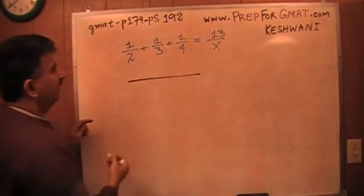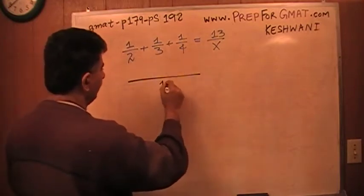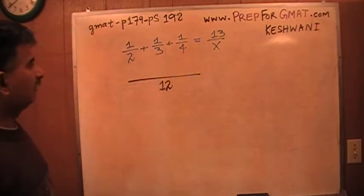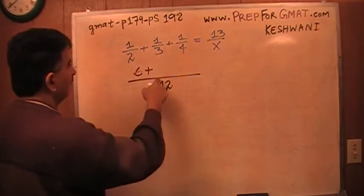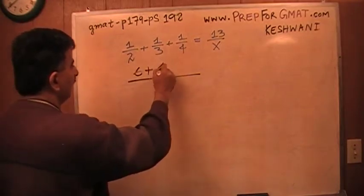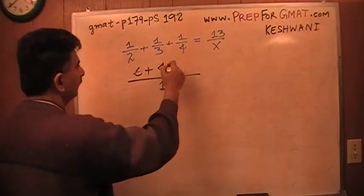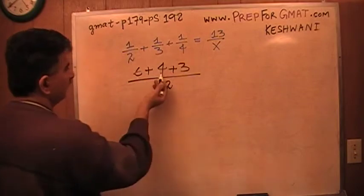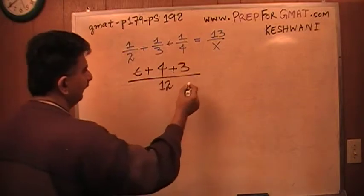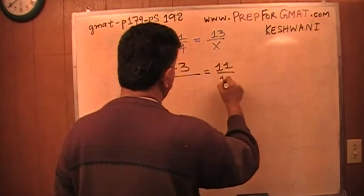Let's find the common denominator. The common denominator of 2, 3, and 4 would be 12, because 12 goes evenly into all three of those numbers. So 12 goes into 2 six times, 12 goes into 3 four times, and 12 goes into 4 three times. Let's see what that is: 6 plus 4 is 10, plus 3 is 13. That gives us 13 over 12.